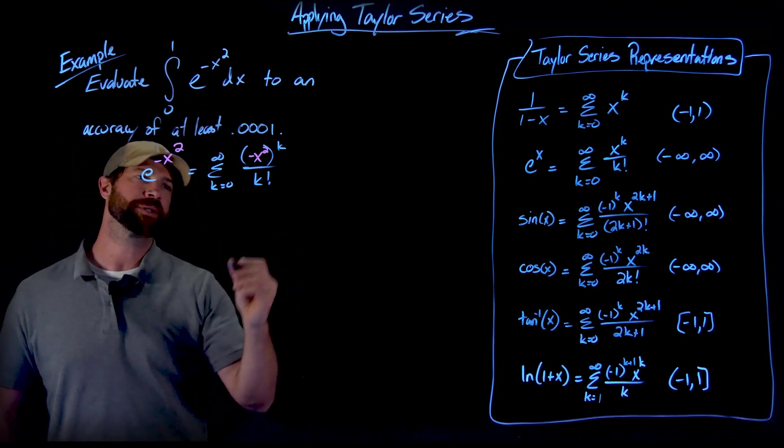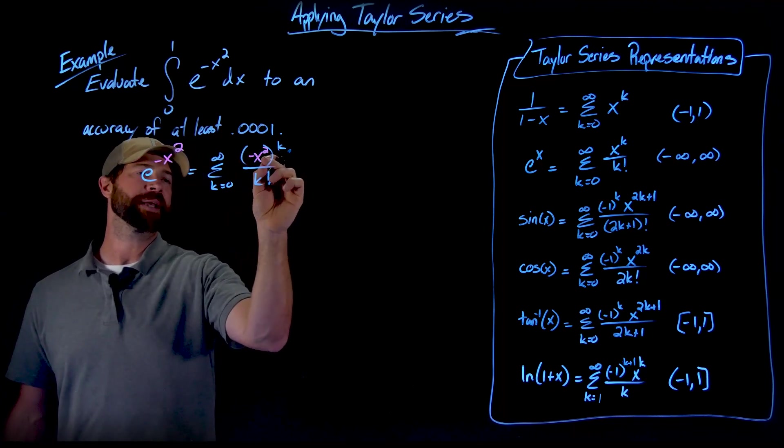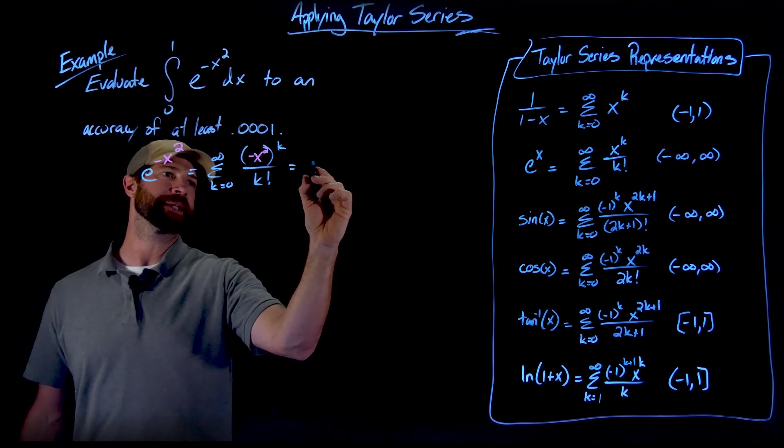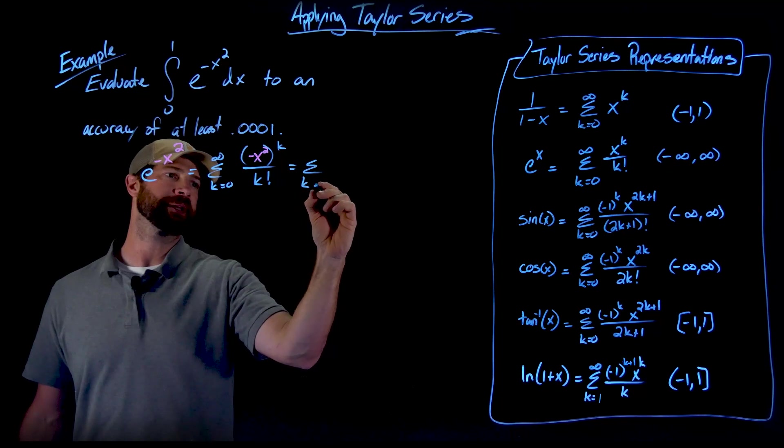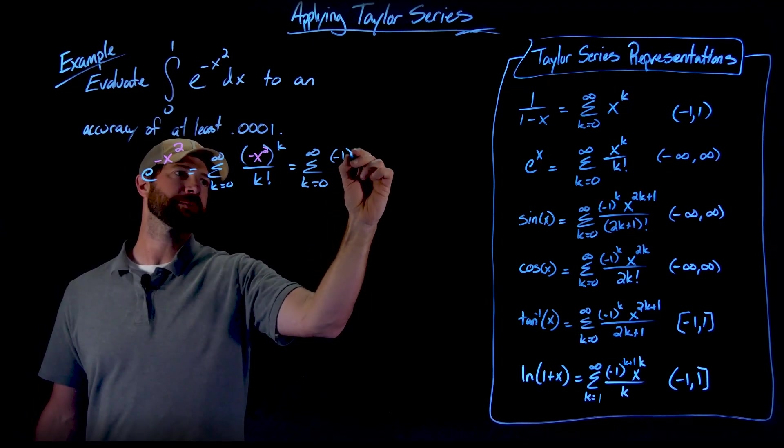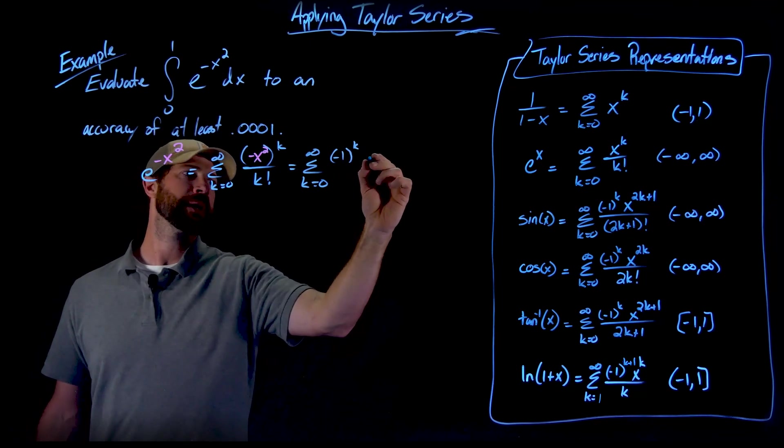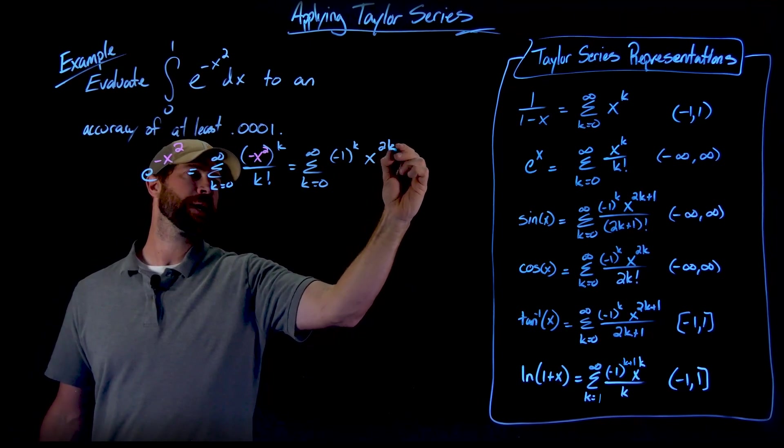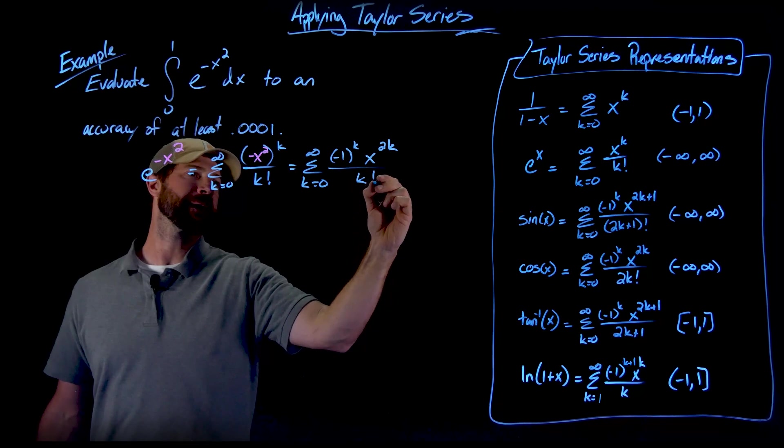One thing I'm going to do right here is just split apart the negative and then use some exponent rules to clean this up real fast to make my life in the next step easier. So this is an alternating series that actually will be very important here soon. This is x to the 2k over k factorial.